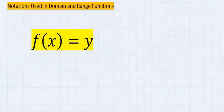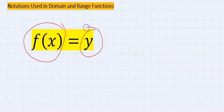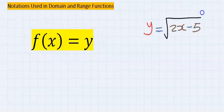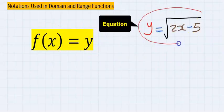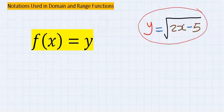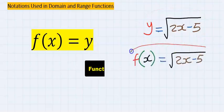The first thing you observe in functions is that f(x) is used in place of y. Instead of writing y equals the square root of 2x minus 5, we can write it as f(x) equals the square root of 2x minus 5.